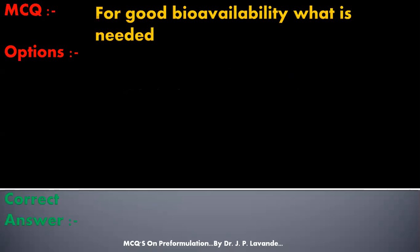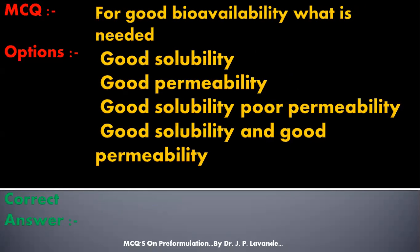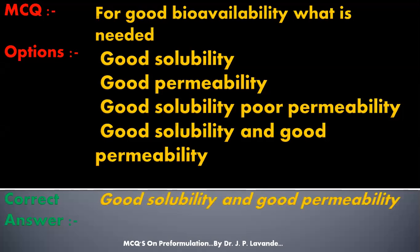Next question: for good bioavailability, what is needed? The options are: good solubility; good permeability; good solubility and poor permeability; or good solubility and good permeability. The correct answer is good solubility and good permeability.